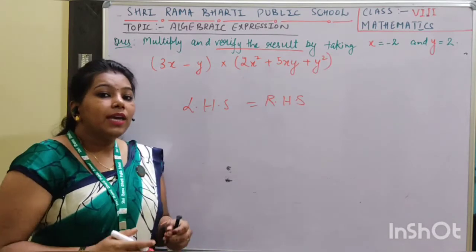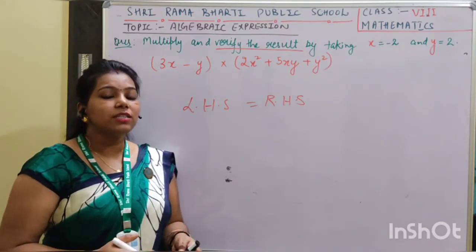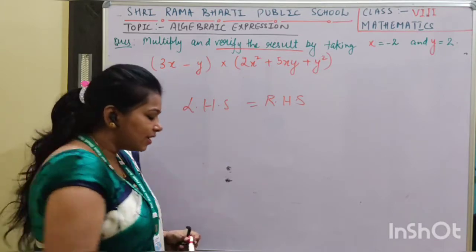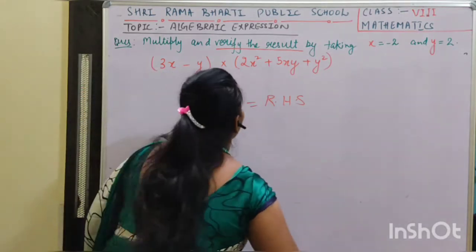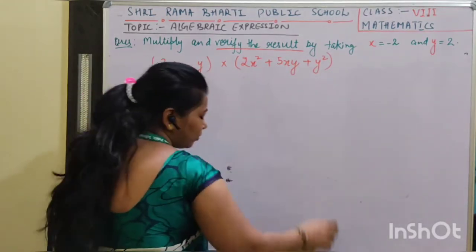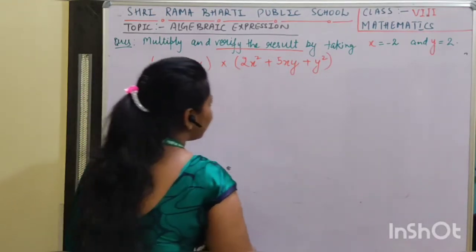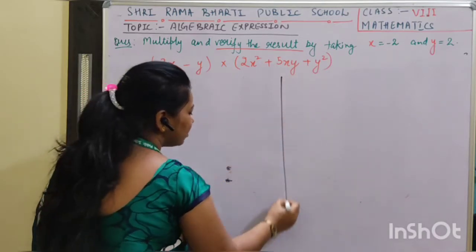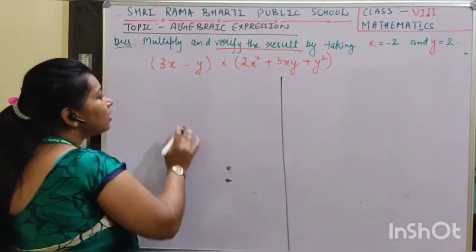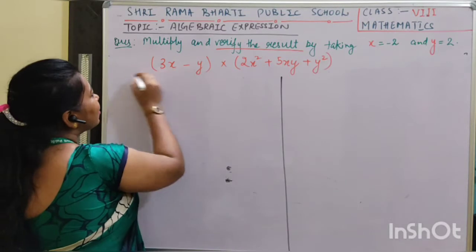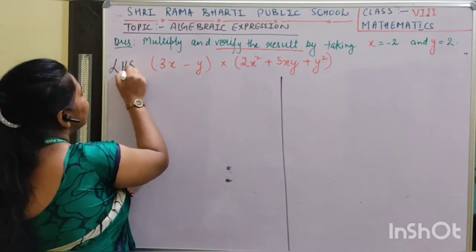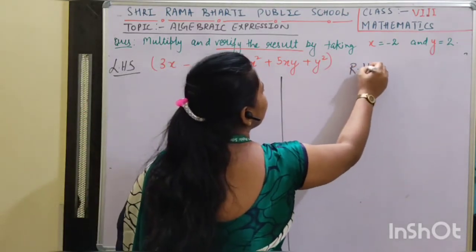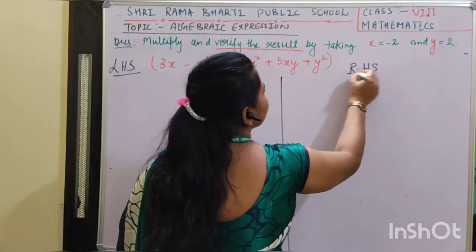Now the thing is what will be LHS and what will be RHS. So let's see what will be LHS here and what will be RHS here. What we will do is divide the whole space into two parts — here I am going to write LHS and here I am going to write RHS.